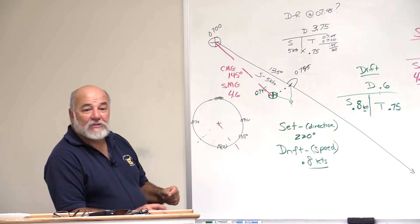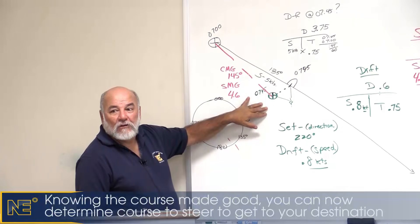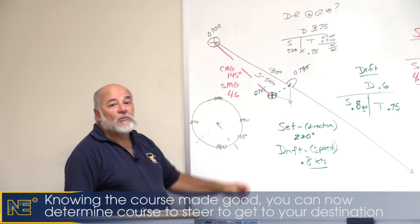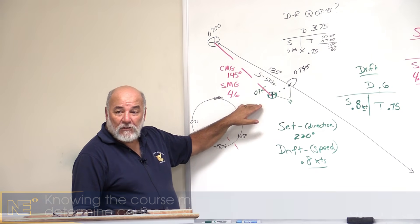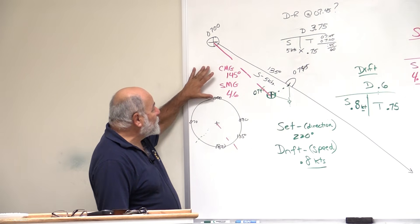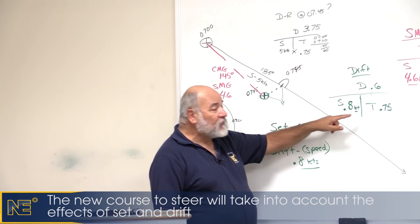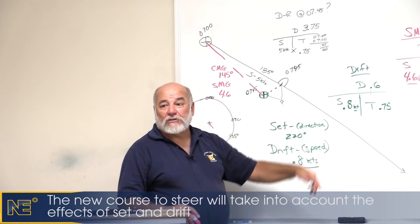I'm going to go real quick now. What happens if we know all this, what would we do? We could calculate a new course, which would be called course to steer. We could calculate a course to steer based on this information that we have and we could steer a course now from here to correct ourselves so that the current would bring us back onto our proper course line.